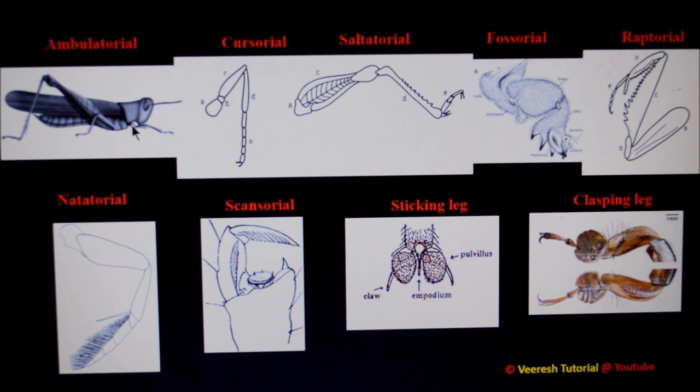Next, we can see the modifications in insect legs. The first type is ambulatorial legs, suited for walking purpose. This type of leg can be seen in the forelegs and middle legs of grasshoppers, where the femur and tibia are slender.